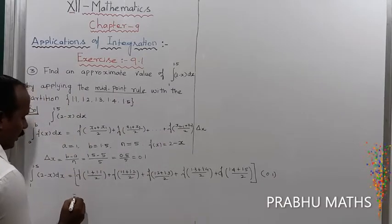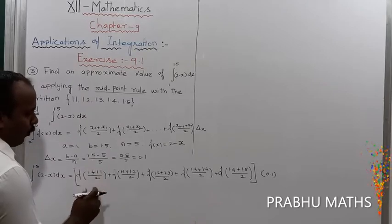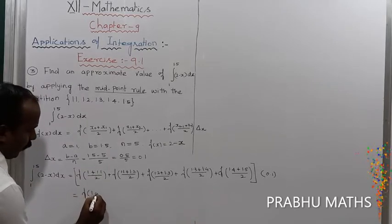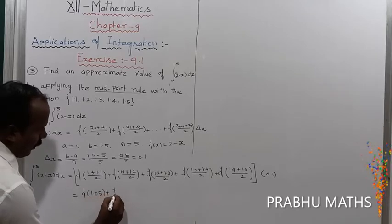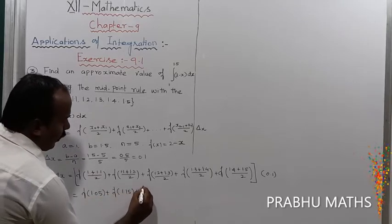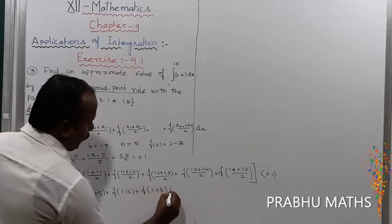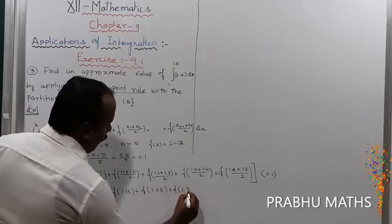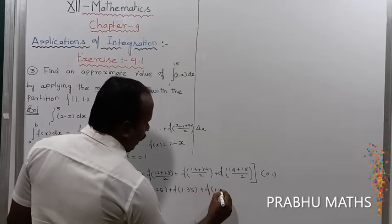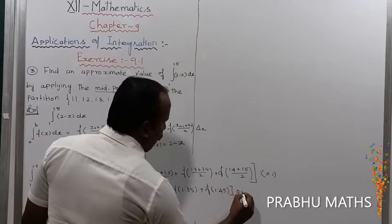So that gives us: f(1.05) plus f(1.15) plus f(1.25) plus f(1.35) plus f(1.45), all multiplied by 0.1.